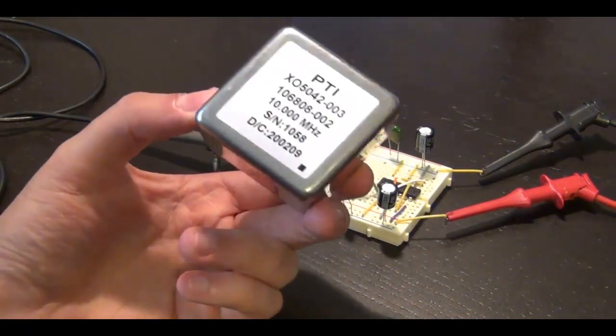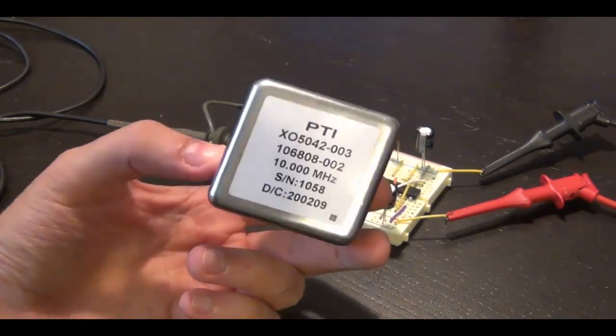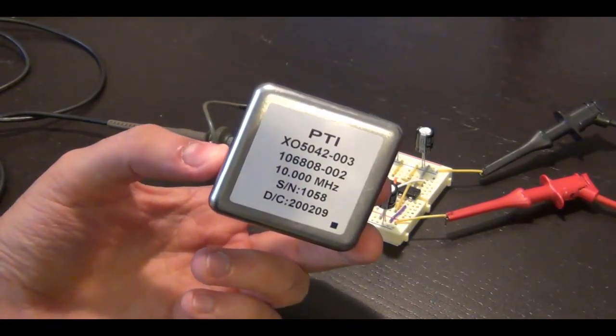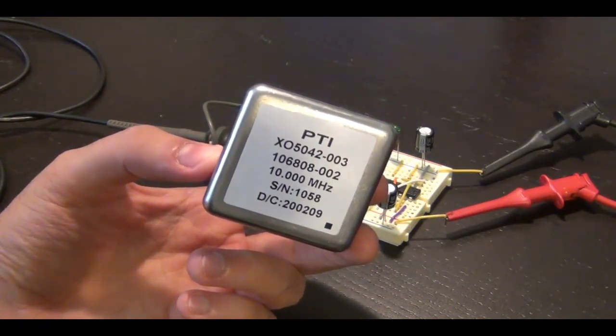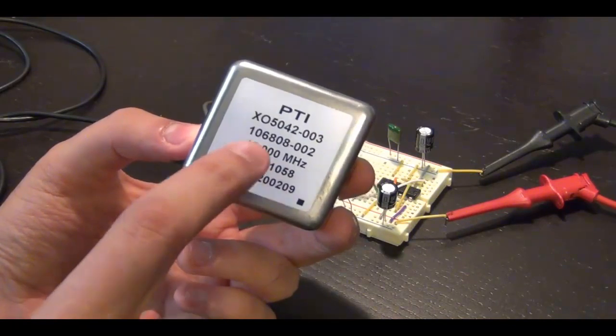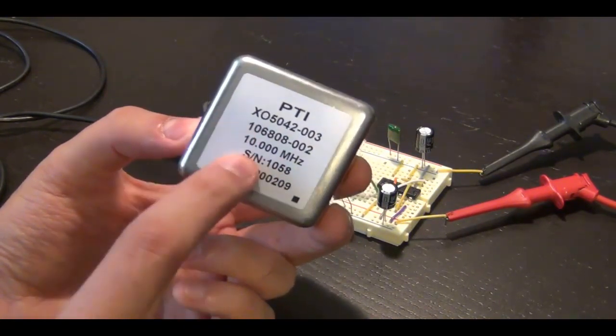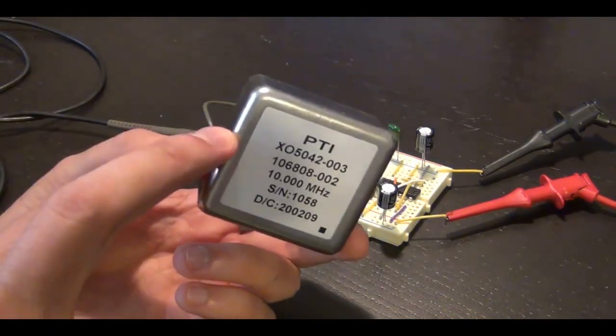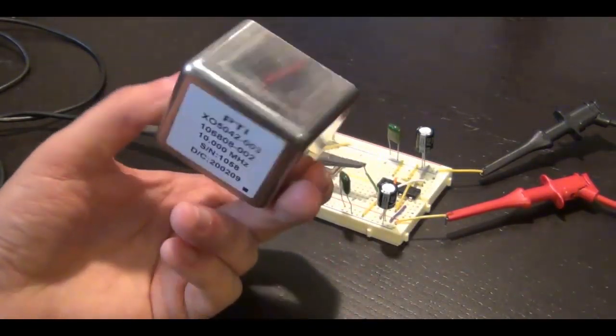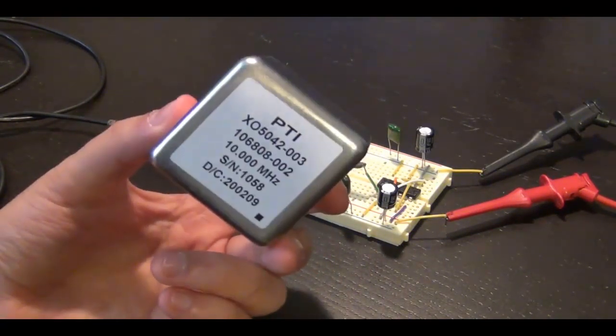And what this does extra is that this also filters the output of the oscillator and it gives you only a single tone. So it has very high spectral purity. So it gives you, if it says 10 MHz, there's only a tone at 10 MHz. Its phase noise is very low. Its drift is very, very low because it has an oven built into it. But at the disadvantage, this thing consumes a lot of power.